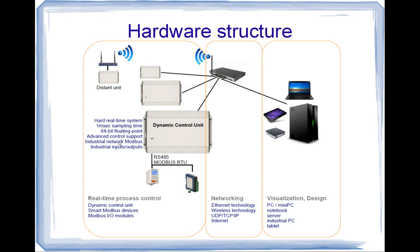The real-time control unit is interconnected with a classical or modern network. Our network uses Ethernet technology, wireless technology, UDP, TCP, IP, and Internet — actually the most modern networking technology available. We can have a wireless connection to a distant control unit. This type of networking is extremely practical — we can have cheap solutions, extremely high-performance solutions, and large networks without limits.